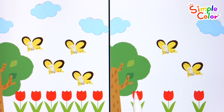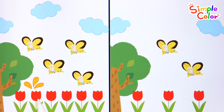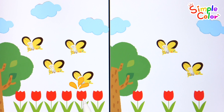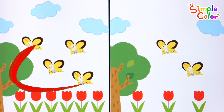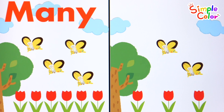Shall we count the flowers? One, two, three, four, five, six. One, two, three. Which one is more? Of the two pictures, there are more clouds, butterflies, and flowers on the left.